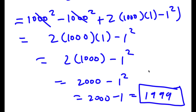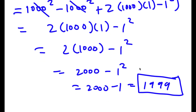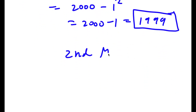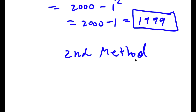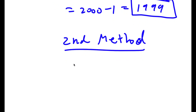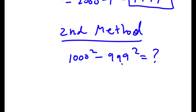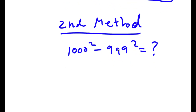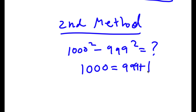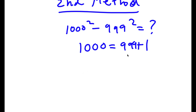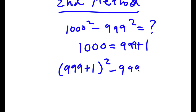So that was our first method. Now for our second method — our original problem is 1,000 squared minus 999 squared. Instead of replacing 999, I'm going to replace 1,000, because 1,000 equals 999 plus 1. Substituting in gives (999 plus 1) squared minus 999 squared.